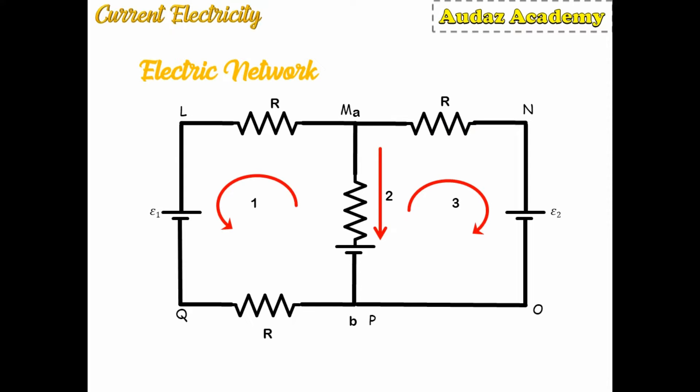Before we go to Kirchhoff's law of electric networks, we will understand what an electric network is and a few terminologies related to it. On your screen you can see an electric network which consists of resistors and electric cells, and in this network all lines are electric conductors.